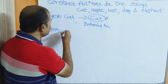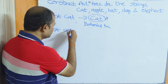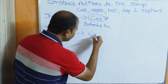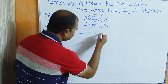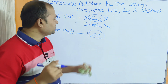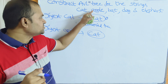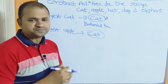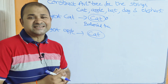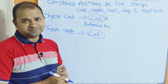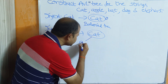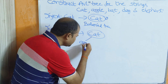Next, insert the next node 'apple'. Compare 'a' with 'c' — 'a' is less than 'c', so apple will be inserted as the left child of cat.